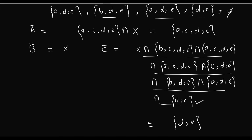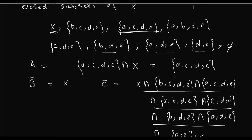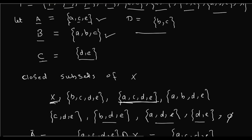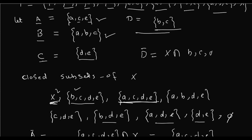Now we take the closure of D. The elements in D are {b,c}. So {b,c} is contained in X, and we look for all closed supersets. Taking the intersection, we get {b,c,d,e}. So the closure of D is {b,c,d,e}. I hope you have understood this example of closure of a set.